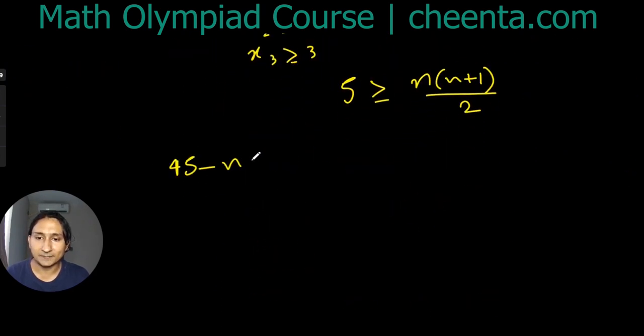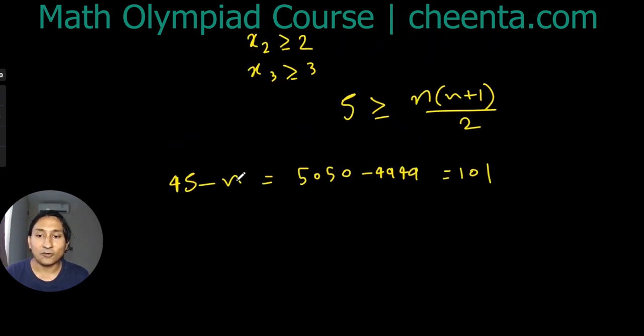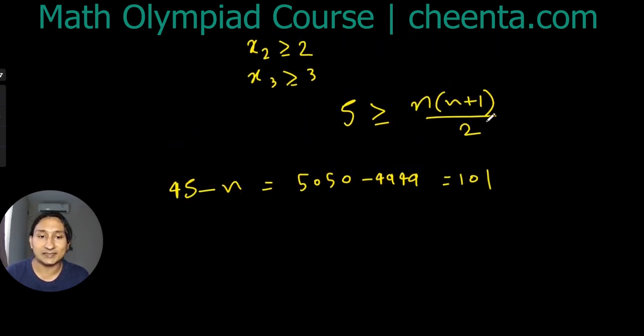So the total sum that has been removed is 5050 - 4949. Therefore 4S - n is 101. Now we know that 4S is greater than or equal to 2n(n + 1). Therefore 101 is greater than or equal to 2n + 1 times n minus n.